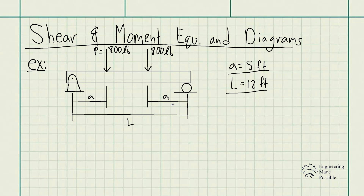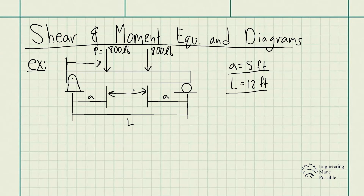Just as in the previous video, whenever we want to look at internal forces within a specific section of the beam, we split it up. The difference here is we're splitting the beam based on where the external forces or moments are being applied. Starting from the left, we split from the start to P — that's section one — then the middle portion, and finally the last section to the end. There will be a different equation for each portion.